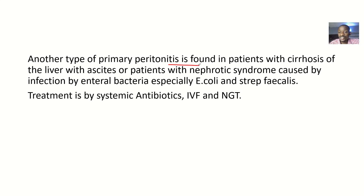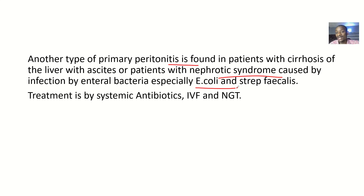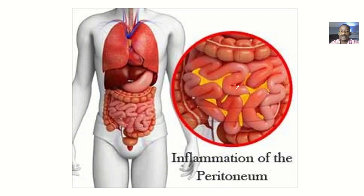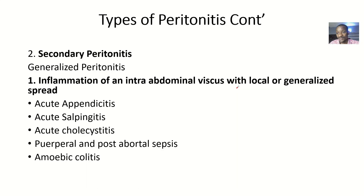Another form of primary peritonitis is found in patients who have cirrhosis of the liver with ascites. It can also occur in patients with nephrotic syndrome. Associated bacteria include E. coli, Streptococcus pneumoniae, and Streptococcus fecalis, which can cause the peritoneum to become inflamed.